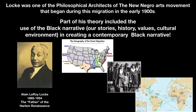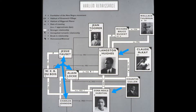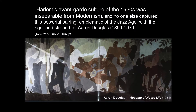Dr. Alain Leroy Locke was one of the philosophical architects of the New Negro Arts Movement that began during this migration in the early 1900s. Part of his theory included the use of Black narrative—our stories, history, values, cultural environment—in creating a contemporary Black narrative. Dr. Alain Leroy Locke was one of the founders of the Harlem Renaissance. I'm sure you've heard of other literary giants of this time, such as Zora Neale Hurston and Langston Hughes. This new sense of self was beyond literature; it was the mandate in all of the arts and part of American modernism.